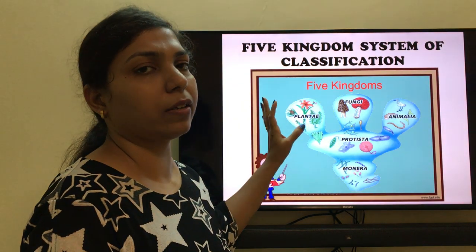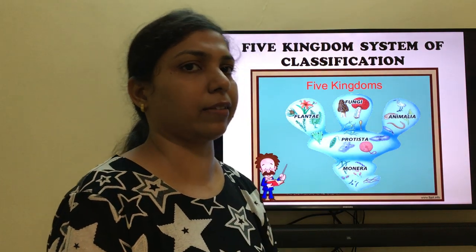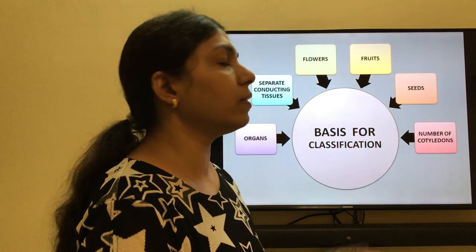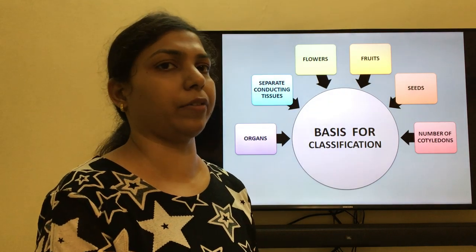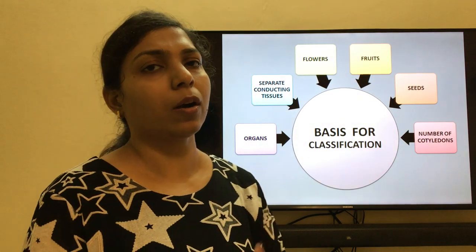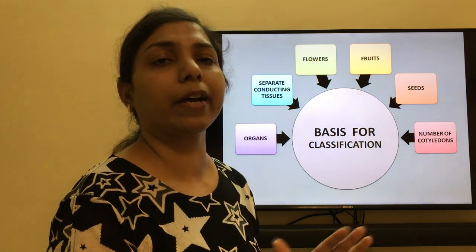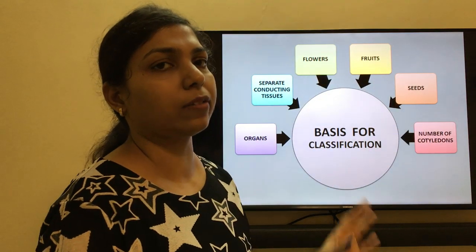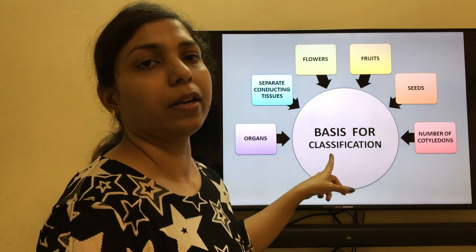Plantae is what you will be covering in 9th standard this year, and Animalia is what you will be covering in 10th standard. Now, what is the basis of classification? How exactly are plants classified and put into different categories? As I mentioned, plants are put into categories based on whether they are similar or different from each other. We have six important properties based on which plants are classified.